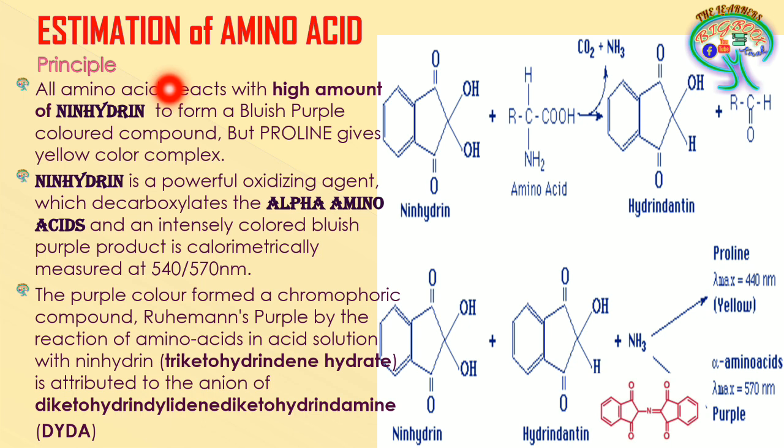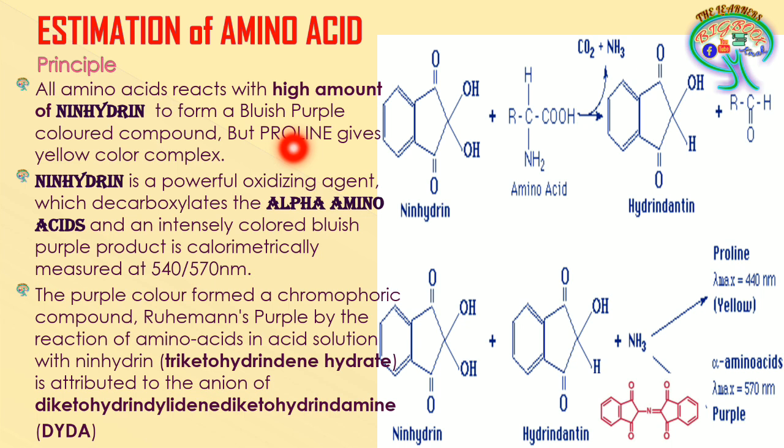The principle is that when amino acids are treated with ninhydrin in excess, all amino acids give a bluish-purple color complex except proline, which gives a yellow color complex. So ninhydrin reacts with all alpha amino acids, and all except proline produce the bluish-purple color.